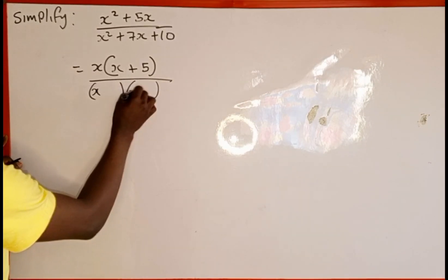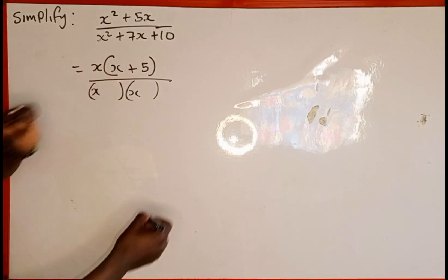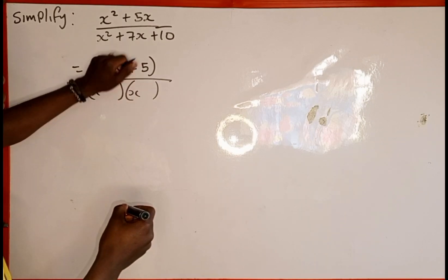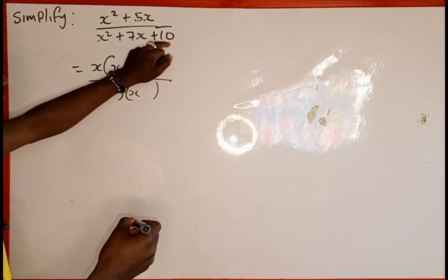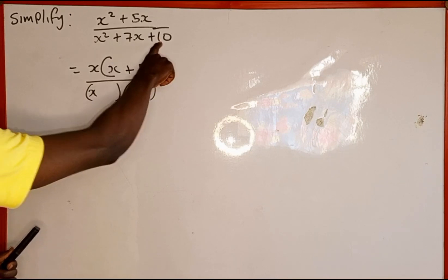We write x here and also x here because x is the variable. So what we are going to do, we are going to consider this 7 and 10. Then we look for two numbers. When we multiply, it is going to give us 10.